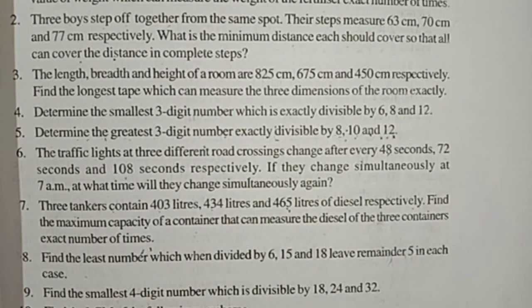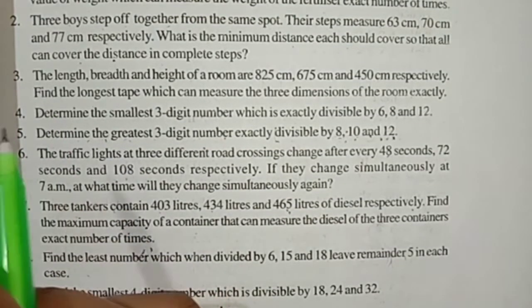Here three boys step off together, and their steps have measured 63 cm, 70 cm and 77 cm respectively. But we have to find the minimum distance each should cover. Minimum distance means we have to find the least. So we have to use the LCM method - least common multiples or lowest common multiples. By LCM method we can find this answer.